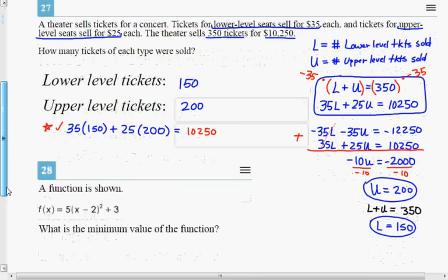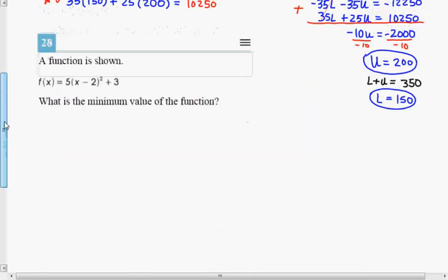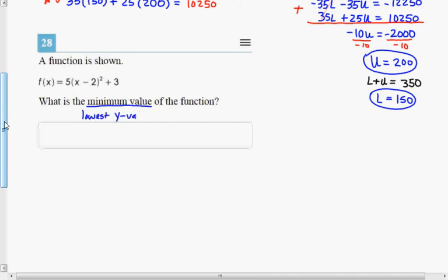Okay, so last one here, I think. Yep, 28. A function is shown. What is the minimum value of the function? Okay, that means the lowest y value. I'm gonna just encourage you, if you want to know what the lowest, the minimum value is for this function, first thing I would say is because there's something squared here, this is a quadratic graph. So if you want to see this really quick, then get your technology pulled up.